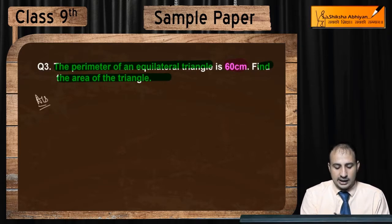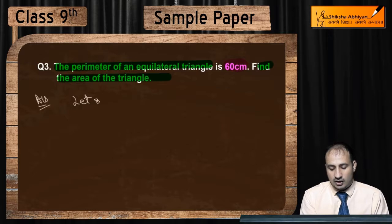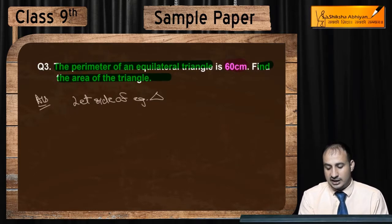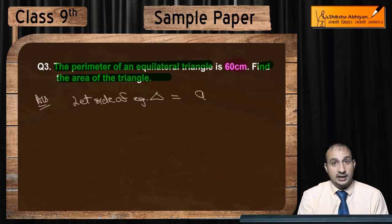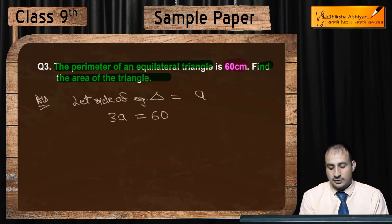Let side of equilateral triangle equal to a. This implies that perimeter will be 3a. 3a is equal to 60, and a is equal to 20 cm.